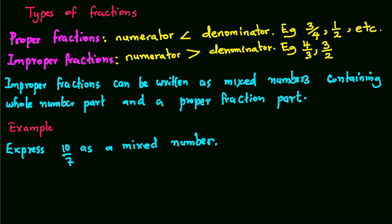7/5, etc. Now since for improper fractions the numerator is greater than the denominator, we can therefore write them as mixed numbers containing a whole number part and a proper fraction part.